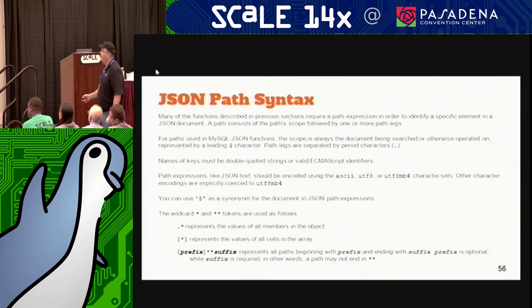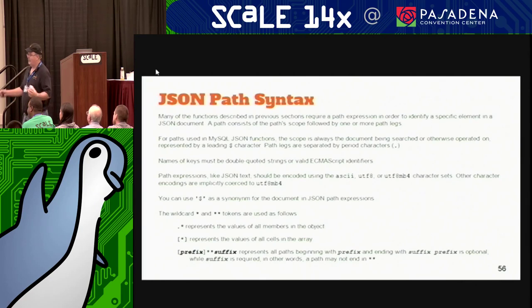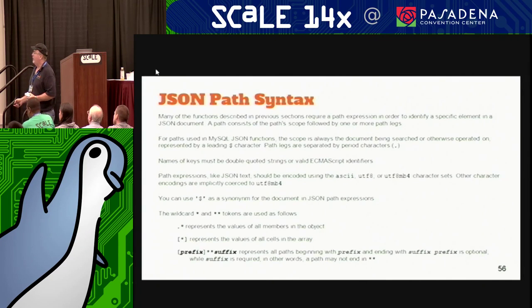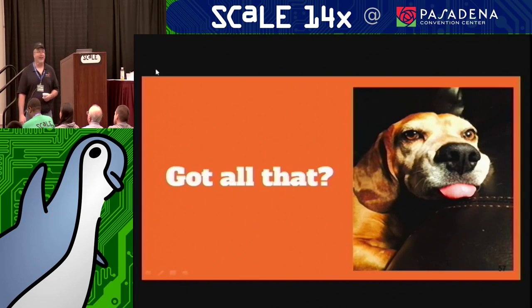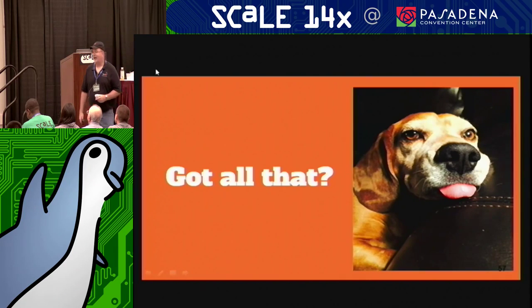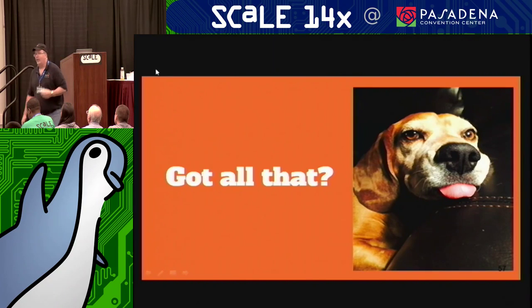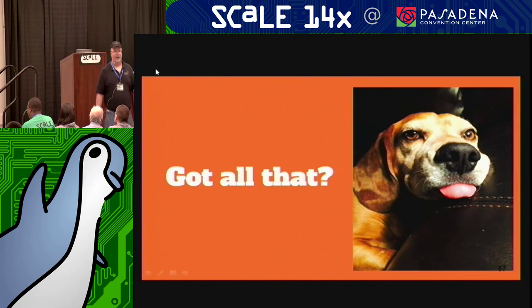Remember: dollar sign is the synonym for the document you're currently working on — which for a DBA translates to 'column.' There are wildcards: dot-dot-star represents the value of all members of an object, and star with a bracket equals the cells in an array. This is going to take a little bit of working even for long-time DBAs, since you're breaking the first law of data normalization and have to go through various hurdles to get to the data.